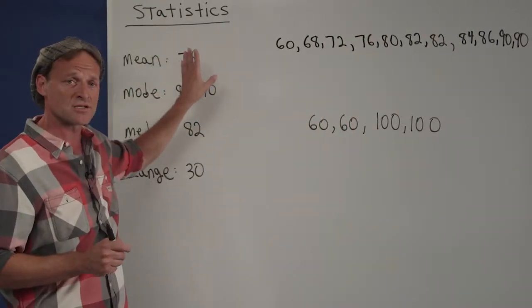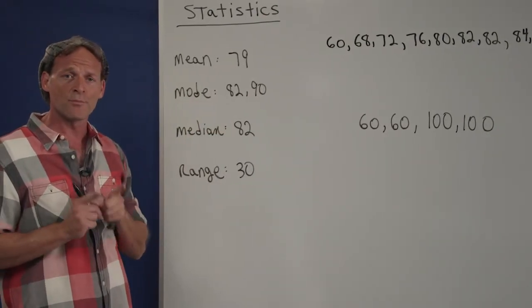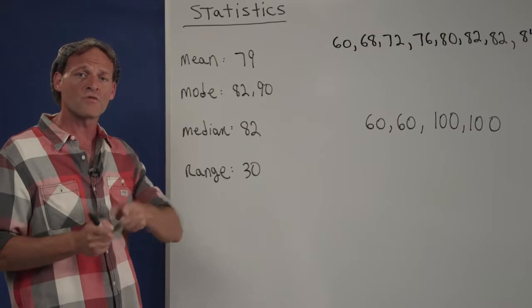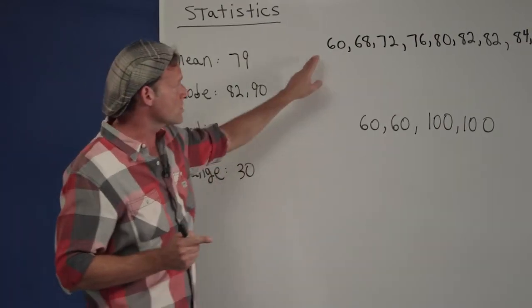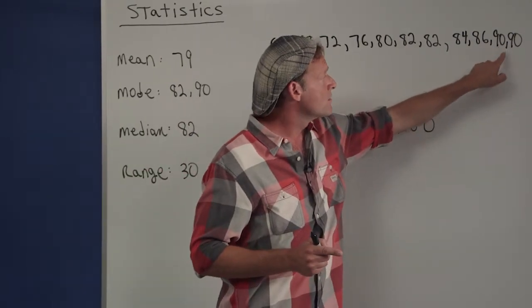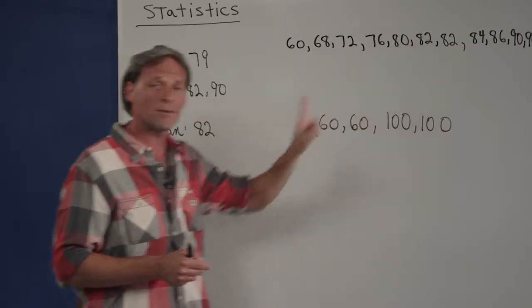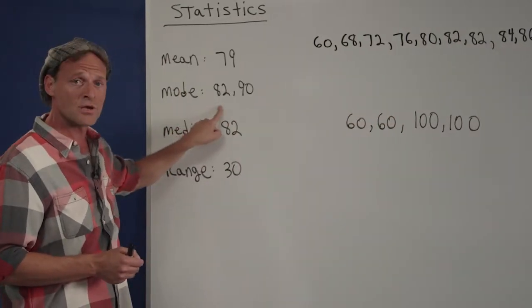Another term to know is mode. Mode simply means the number or numbers that come up more than all of the other ones. For example, when we scan across, we see that the number 82 and the number 90 come up more often than the other ones. So this example here has two modes: both 82 and 90 are modes.